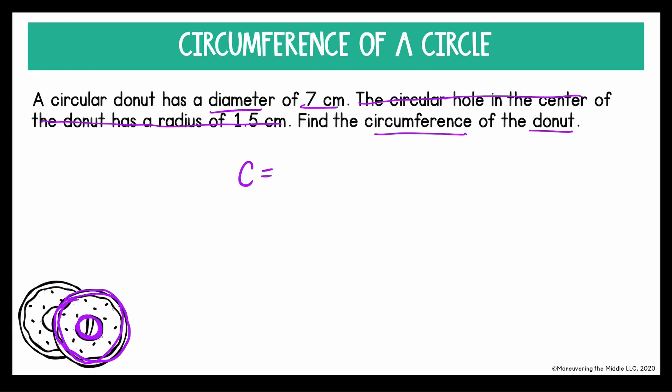The circumference, since we are given the diameter, is equal to pi times the diameter. So filling in what we know, the diameter is 7. We'll multiply 3.14 times 7. And we'll get a solution of 21.98 centimeters.